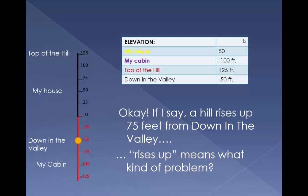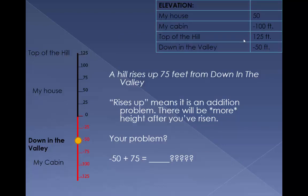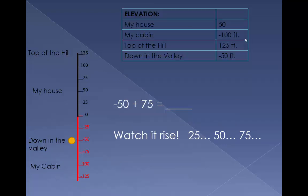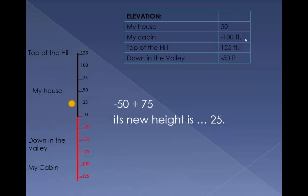If I say a hill rises up 75 feet from down in the valley, 'rises up' means what kind of problem? It means that it's an addition problem — there will be more height after you've risen. Your math problem: negative 50 plus 75 is what new height? Watch it rise. Your new height is 25.